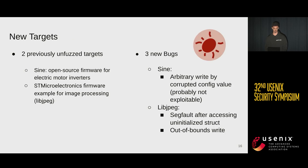We also explored our approach with two previously unfuzzed targets: one is an open-source firmware for electric motor inverters, and the other is an example firmware for STM embedded devices doing JPEG parsing. We were able to find three new bugs and reported those to the vendors.